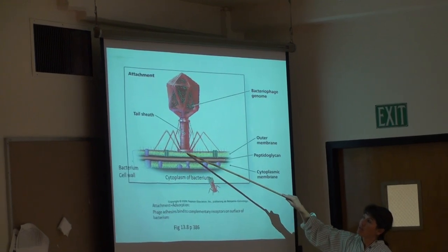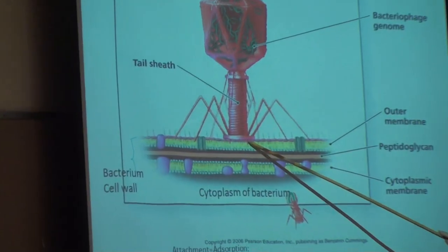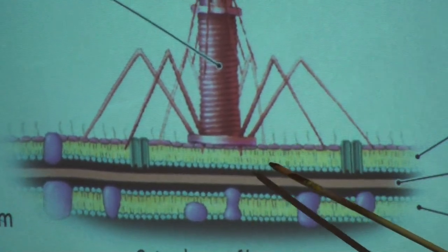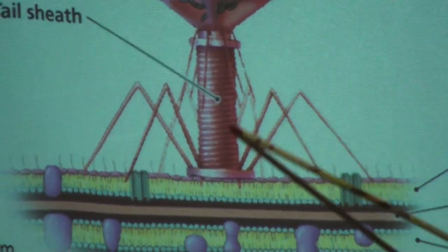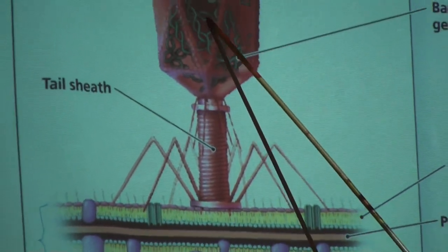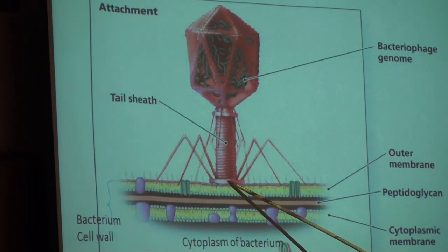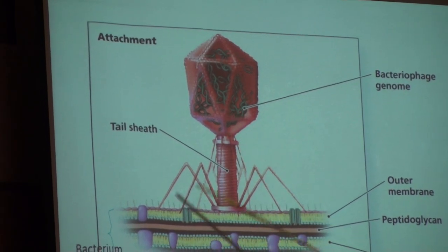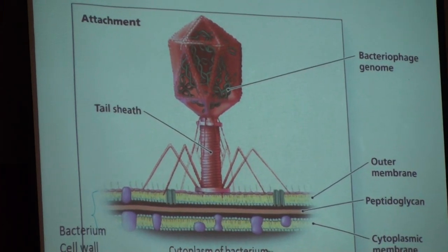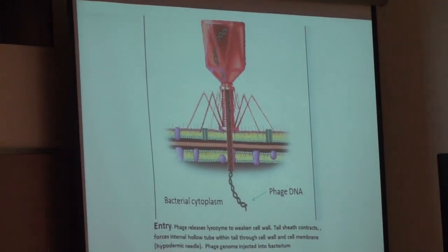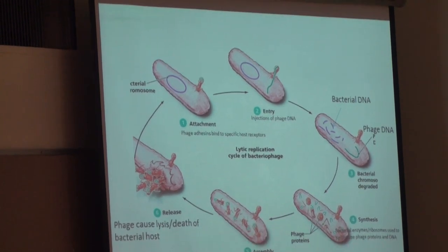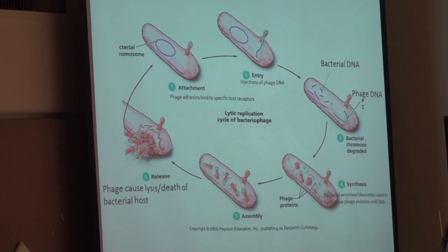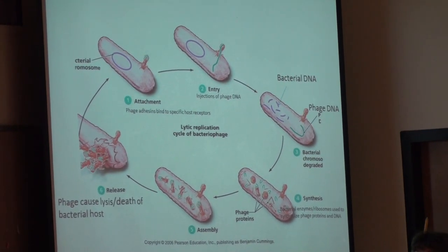The virus releases a phage enzyme similar to lysozyme, which hydrolyzes glycosidic bonds in peptidoglycan to weaken it. Once the lysozyme has been released, the tail sheath contracts and forces the phage DNA through the tail sheath, across the cell wall and cell membrane, into the cytoplasm of the bacterium. In bacteriophage, the protein portion gets left outside of the cell — only the genetic information gets injected. This is the complete lytic replication cycle of bacteriophage.